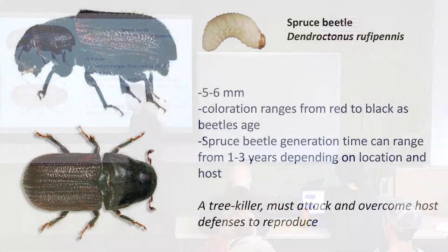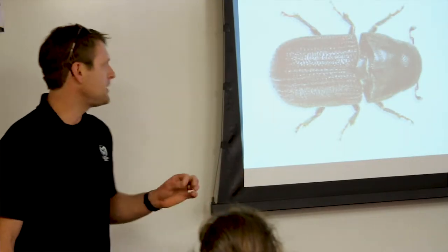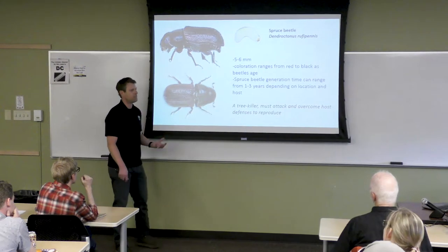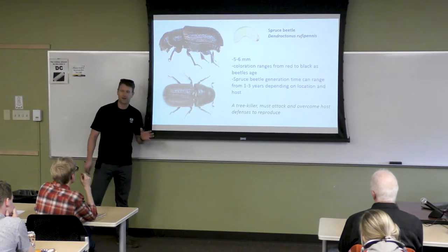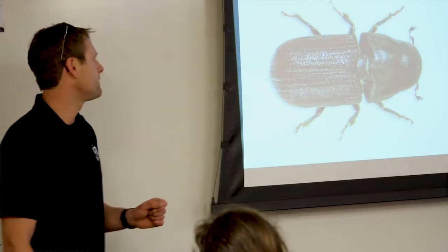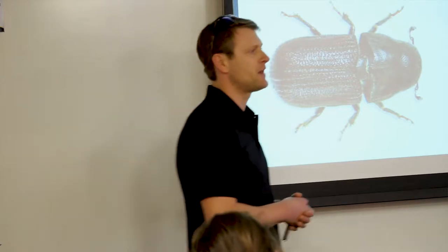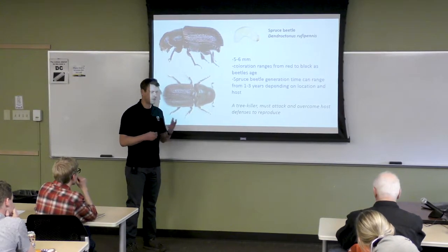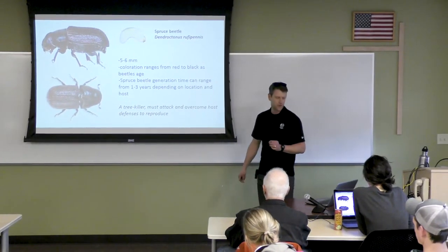First, let's discuss what exactly a spruce beetle is. This is a tree-killing insect, five to six millimeters in size — not very large. The name dendroctonus literally translates to "tree killer." As part of their life cycle, they are compelled to attack and overcome living host trees, partly due to their interactions with microbial symbionts. The life cycle can range from one to three years depending on the population and environmental conditions; in colder environments they tend to take longer to develop, which can have significant ecological impacts.